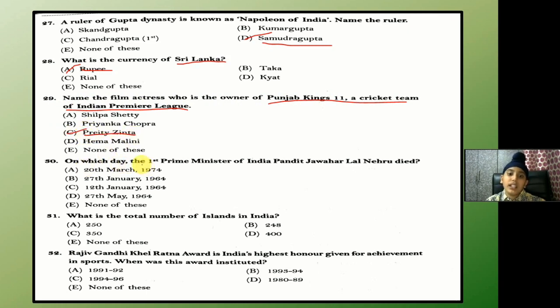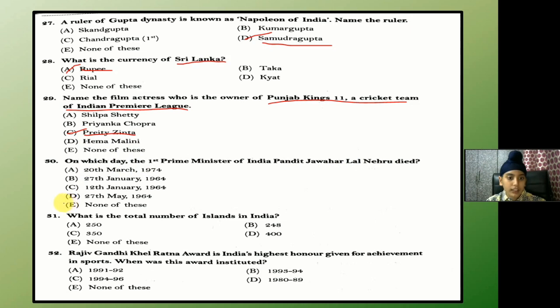On which day did the first Prime Minister of India, Pandit Jawaharlal Nehru, die? The answer is D — 27th May 1964.